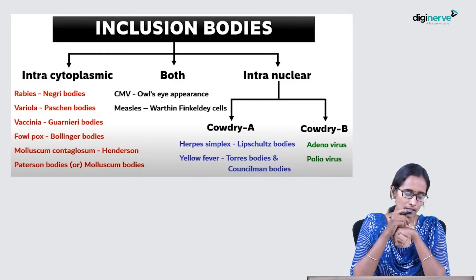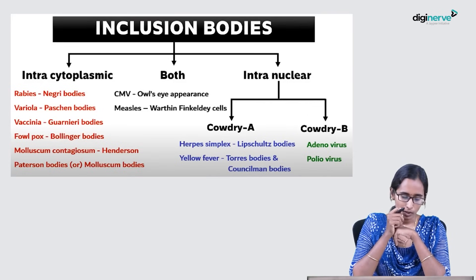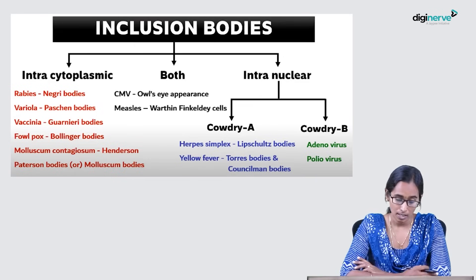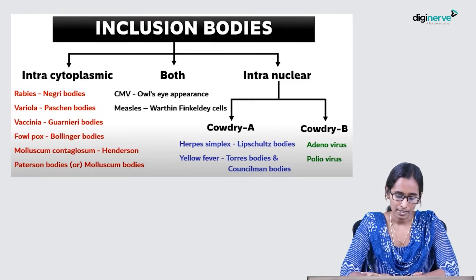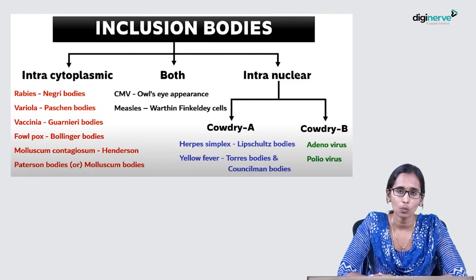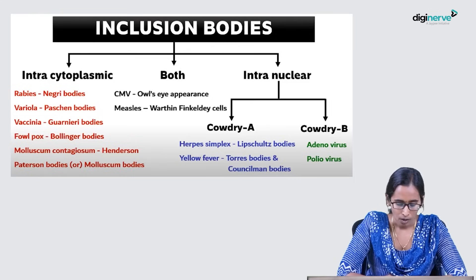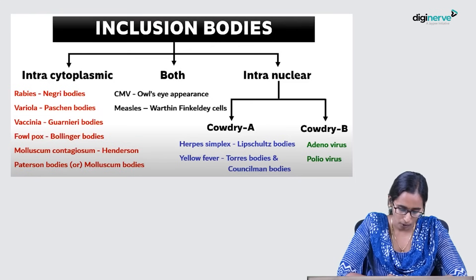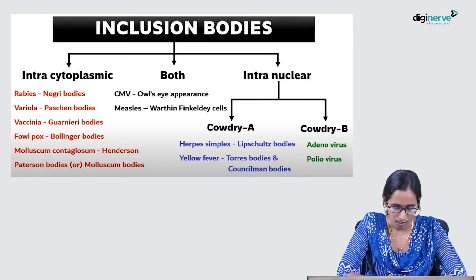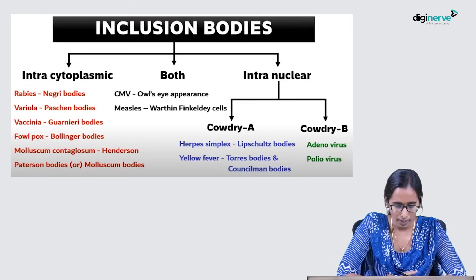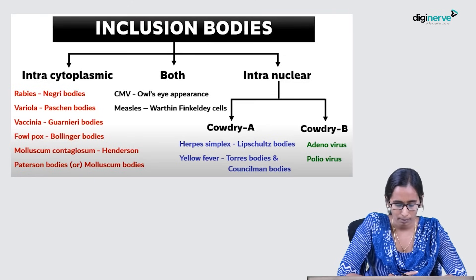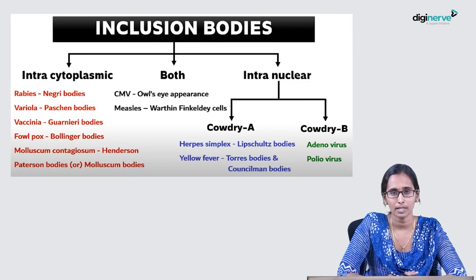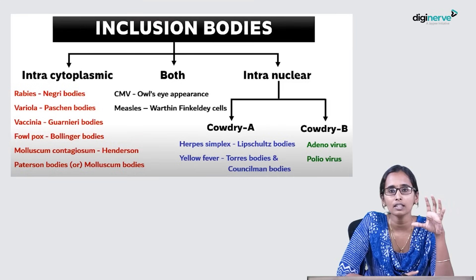Under intracytoplasmic inclusion bodies: Rabies has Negri bodies, Variola has Paschen bodies, Vaccinia has Guarneri bodies, Fowlpox has Bollinger bodies, and Molluscum contagiosum has Henderson-Paterson bodies (also called Molluscum bodies). These are the intracytoplasmic inclusion bodies.